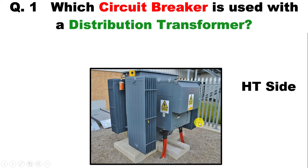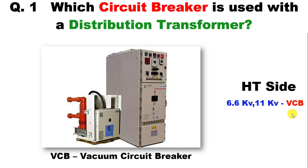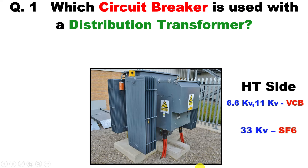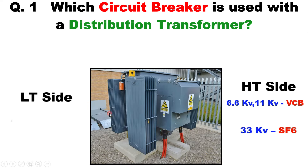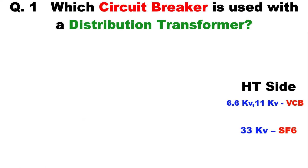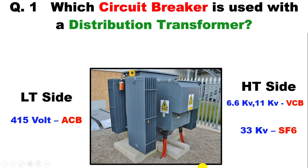The power supply given to the transformer can be 6.6 kV or 11 kV. If up to 11 kV power supply is given, we use a VCB — Vacuum Circuit Breaker. In some companies, 33 kV incoming power supply is used; in that condition we use an SF6 circuit breaker. On the secondary side, voltage is low, so we use an ACB — Air Circuit Breaker.